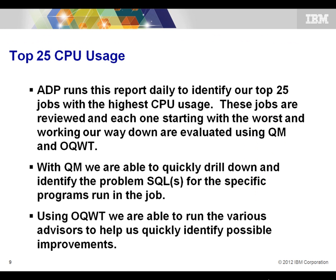Our top 25 CPU usage reports are run on a daily basis. They list our top 25 CPU consumers starting with the worst going down to the least. We take the report, pick out the first job, use QM, then use OQWT to evaluate and come up with a resolution. With QM, we can quickly drill down and identify the problem SQL for a specific program that runs in the job. In our shop, most jobs run on average 10 to 20 programs, so imagine being told a job is running for eight hours and needing to find which SQL in which program is causing the CPU consumption.